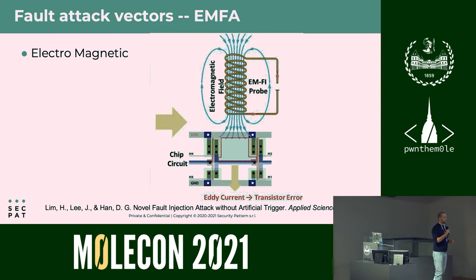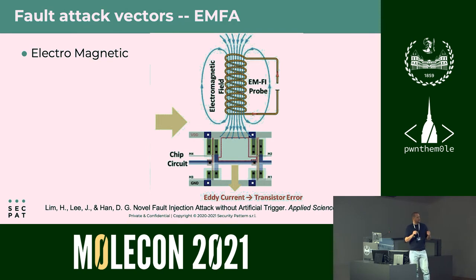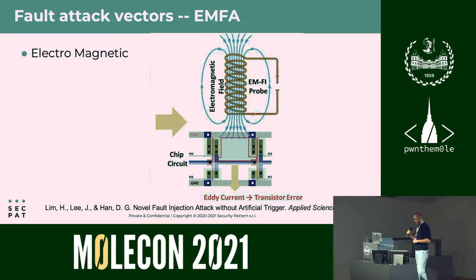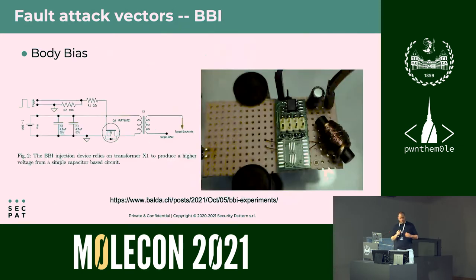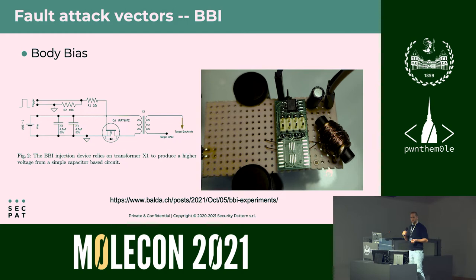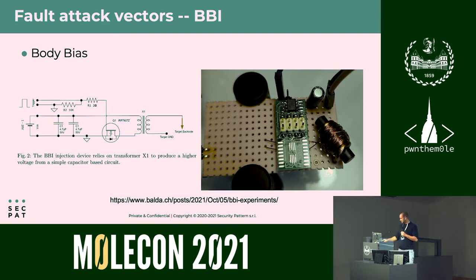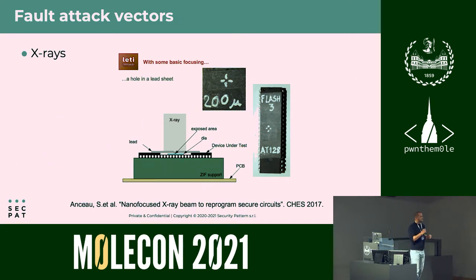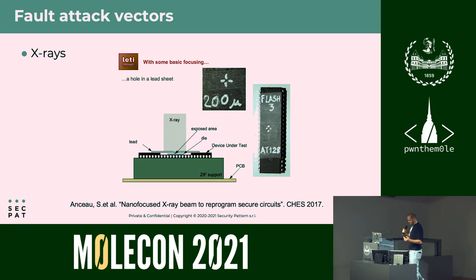Another way to inject faults is EMFI, which is the basis of the tool presented in this work. By producing a sufficiently strong electromagnetic field near the chip circuit, it may induce eddy currents inside, and such eddy currents may activate some of the transistors. Another method is body bias injection, where a high-power voltage applied to the silicon substrate modifies internal transistor behavior. Leity showed in 2017 that X-rays can also corrupt the internal transistors of a functioning chip.